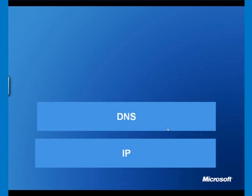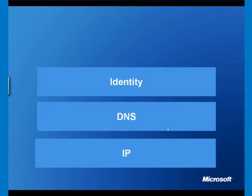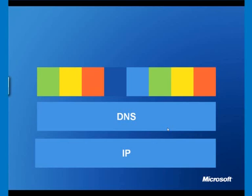Now, if you look at the next layer — the identity layer — I suppose you could say there is a layer. The problem is it's a fragmented layer. It's a layer of many different solutions. There is no one single defined identity layer for the internet, and that's one of the things which is making the internet a very insecure and dangerous place to be.